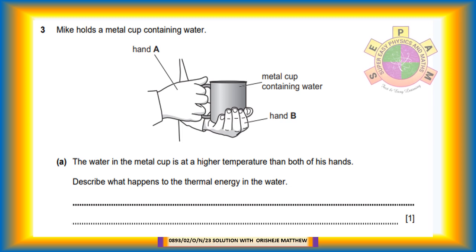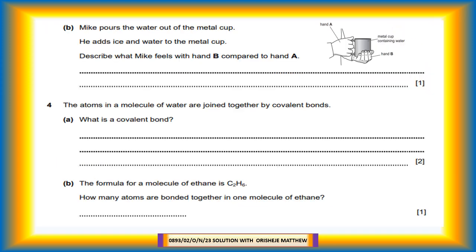Question 3. Mike holds a metal cup containing water. Question 3a: The water in the metal cup is at a higher temperature than both of his hands. Describe what happens to the thermal energy in the water. Thermal energy transfers from the water in the cup to the hand. Thermal energy flows from the cup to the hand. Question 3b: Mike pours the water out of the metal cup. He adds ice and water to the metal cup. Describe what Mike feels with hand B compared to hand A. Hand B feels colder than hand A that is holding the handle of the cup.